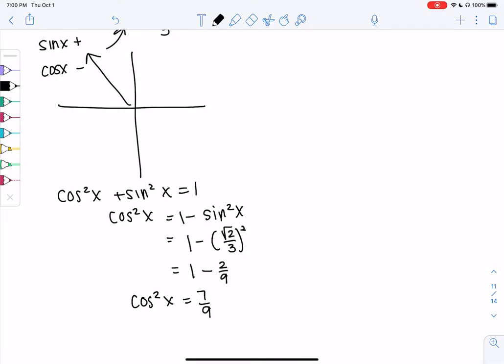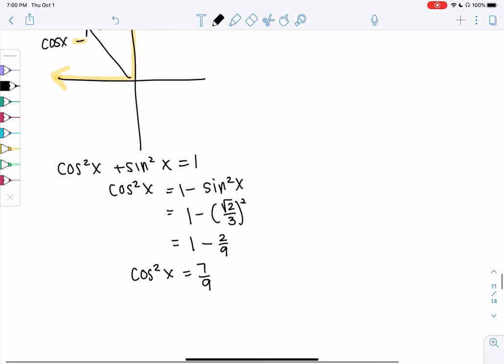And then when we take the square root, we have to check, is it going to be the positive or negative root? And so in this case, it's going to be the negative root because we're in the second quadrant. So that's why that was important to figure out. So cosine of x will be the negative square root of 7 ninths or negative square root 7 over 3.